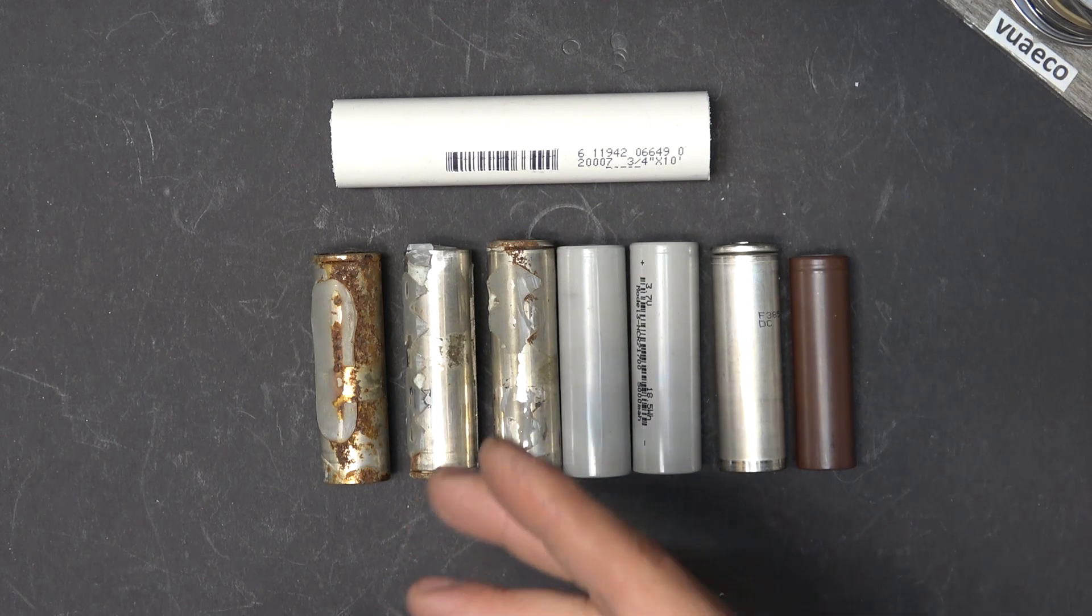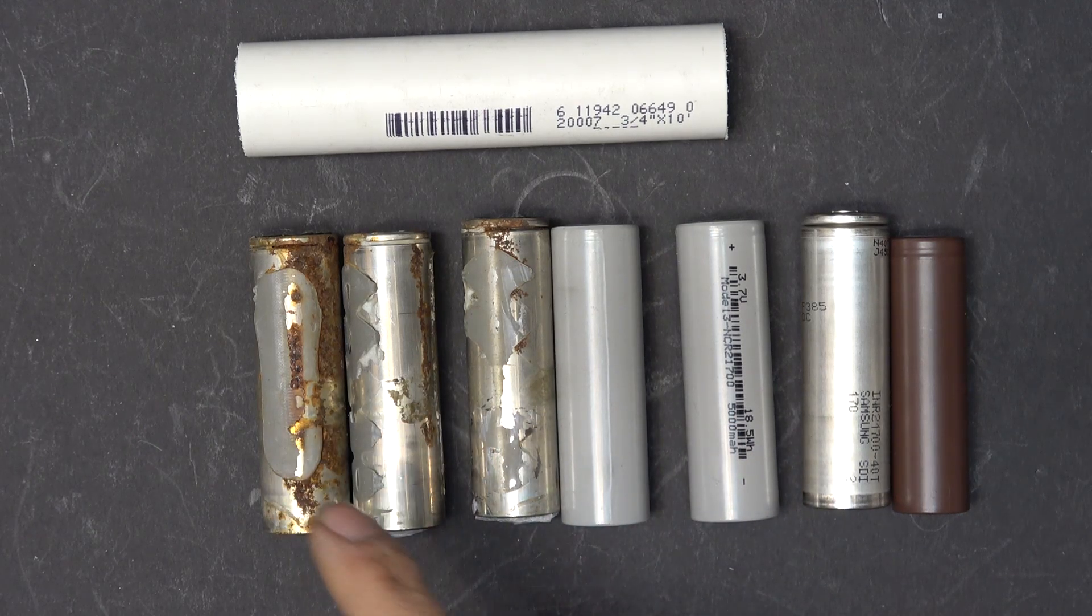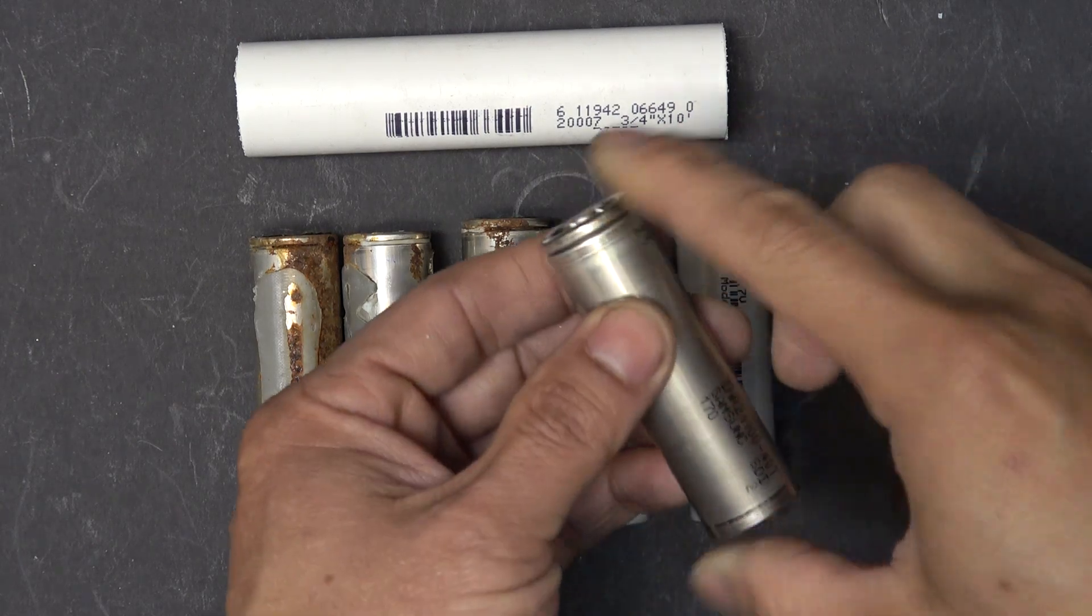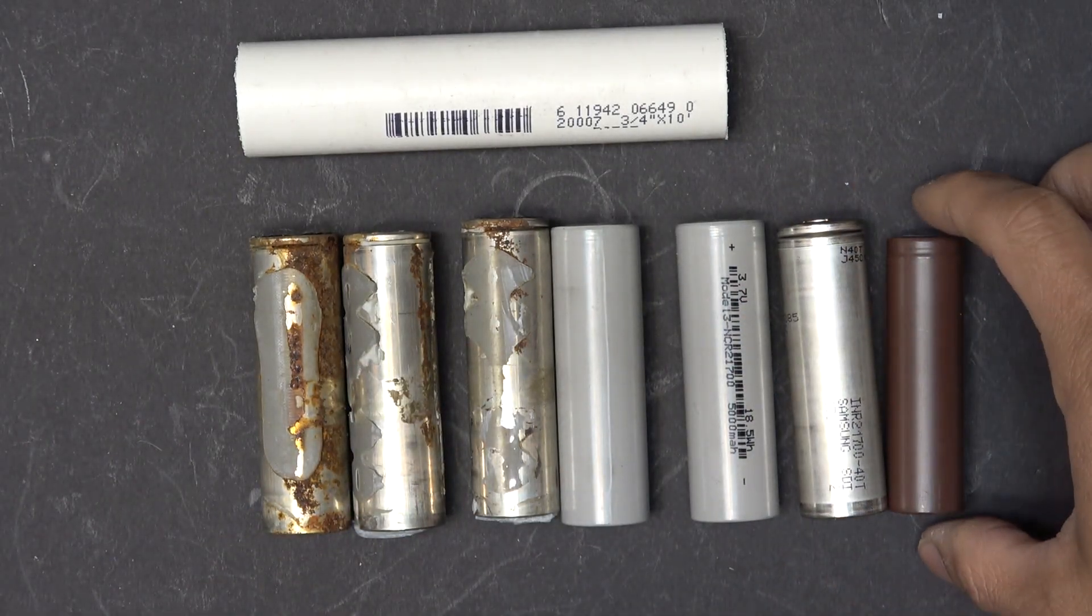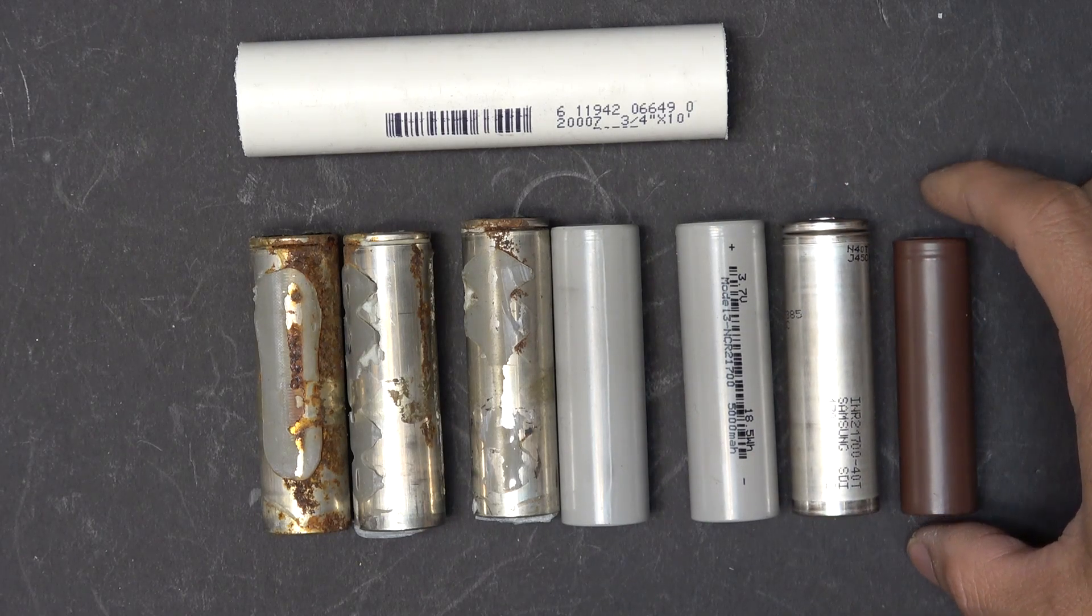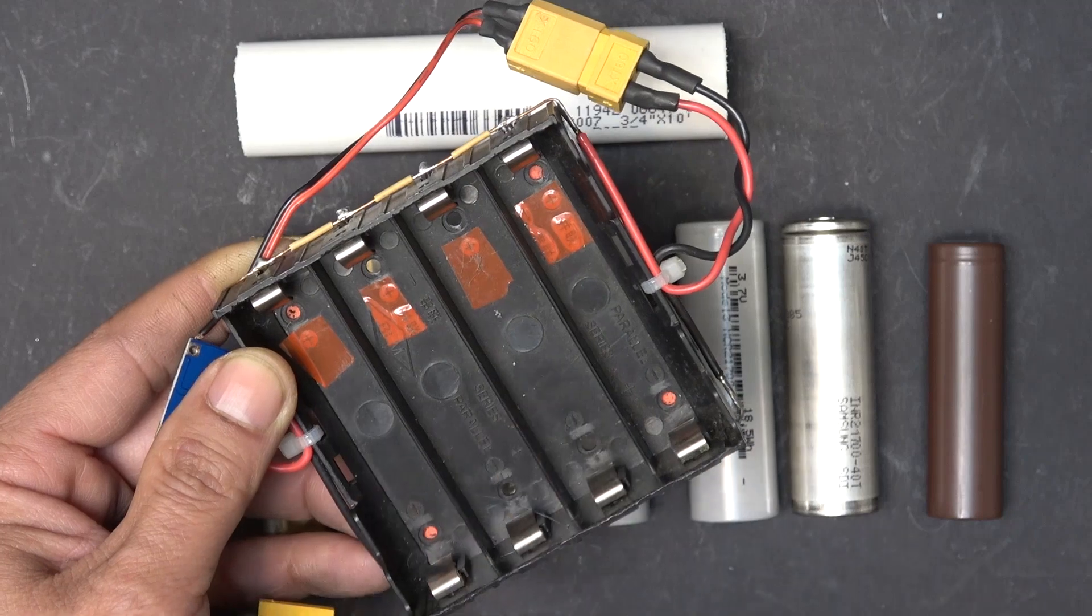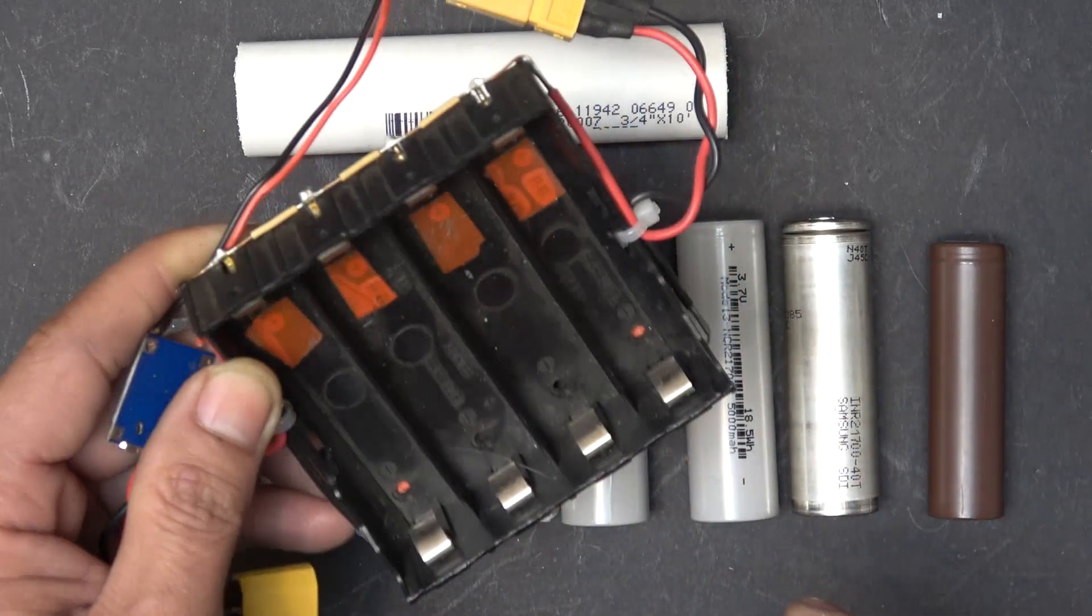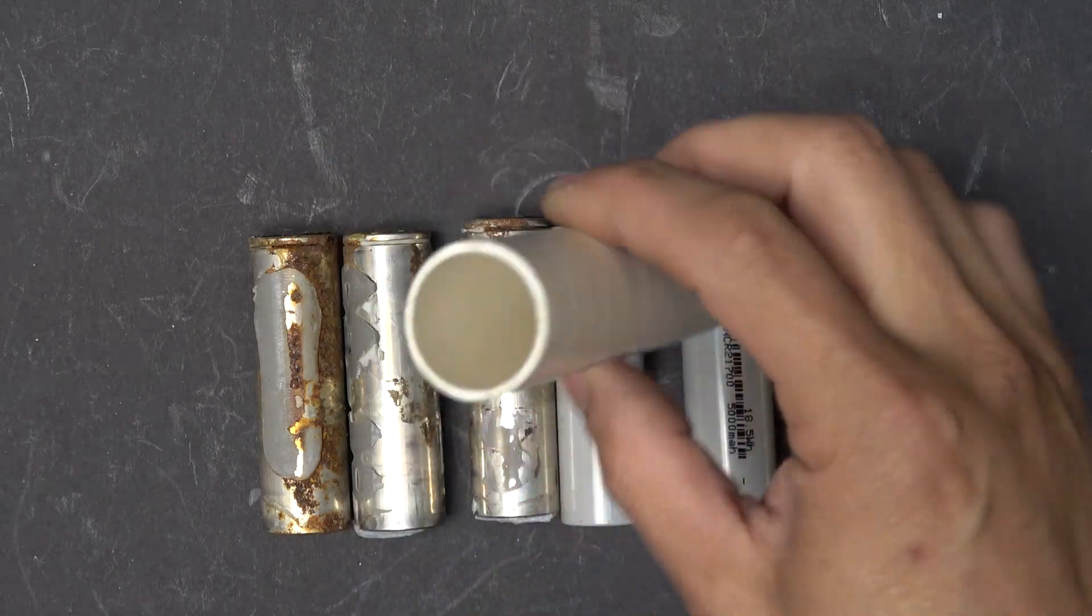Over here I have five 21700 cells salvaged from a Model 3 battery module, and this one here salvaged from a Bosch power tool battery is a Samsung 40T. As a comparison, this is a regular 18650 cell and you can see it's a little bit smaller. Usually for 18650 batteries I use this case and it's a very good case. But for 21700 cells these cases are harder to find and expensive, and therefore that's why I want to make my own case using PVC pipes.